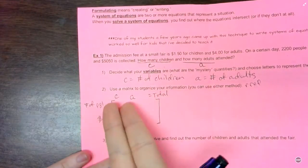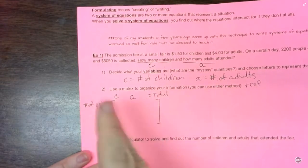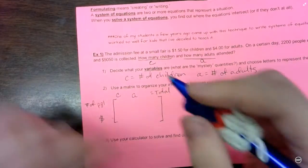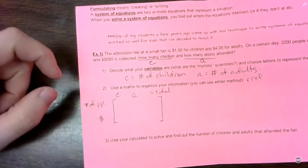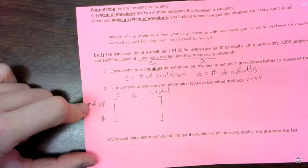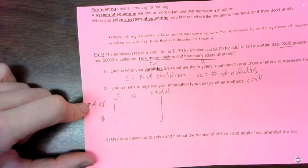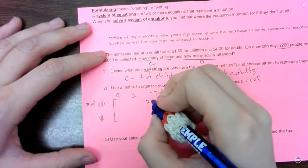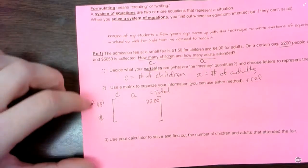Just like if you wanted, you could flip flop the variables, put adults and children. Doesn't matter. So now I'm going to fill in the information from the problem that I know. So I know for total number of people, 2,200 people showed up. So that's a total. I'm going to put that here.